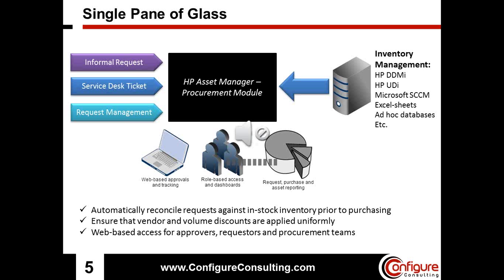When you bring these two types of sources together, you're automatically able to reconcile incoming requests against in-stock inventory, preventing duplication of purchases and wastage of resources. You're also able to ensure vendor discounts and volume discounts are consistently applied in a systematic format across all requests. End users — including executive-level approvers, requesters, and other procurement team members — can access the interface through a role-based web link tailored to their needs from both an access and dashboarding perspective.